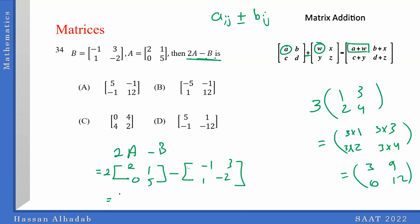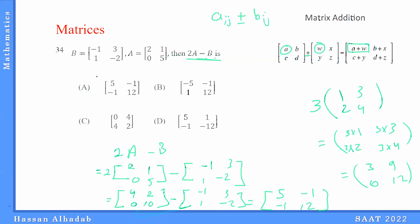So this is 4, 2, 0, 10, minus negative 1, 1, 3, negative 2. When you subtract, you take elements with the same position. So 4 minus negative 1 is 5; 2 minus 3 is negative 1; 0 minus 1 is negative 1; 10 minus negative 2 is 12. So the answer is A.